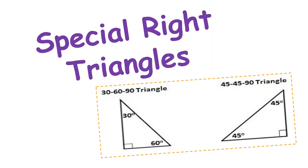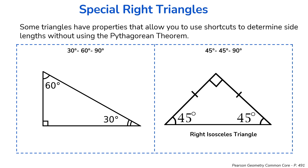Let's take a look at special right triangles. Special right triangles have properties that allow you to use shortcuts to determine the side lengths of a right triangle without using the Pythagorean theorem. The two types of special right triangles are the 30-60-90 triangle as well as the 45-45-90 degree triangle. This is also a right isosceles triangle.